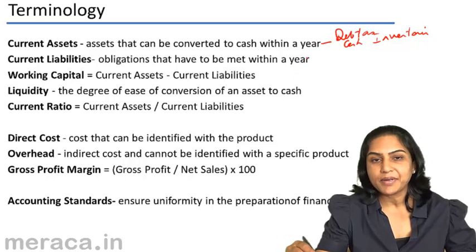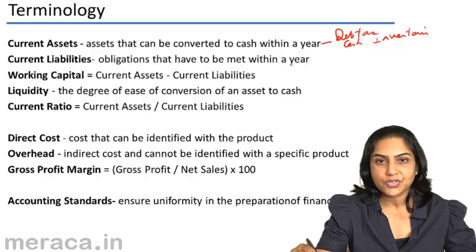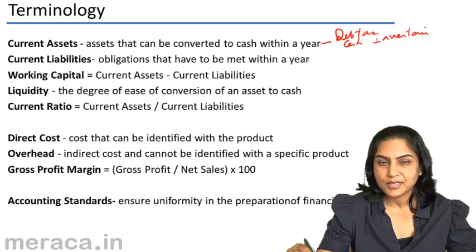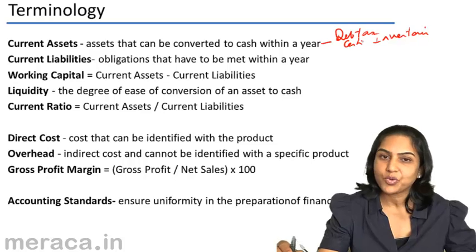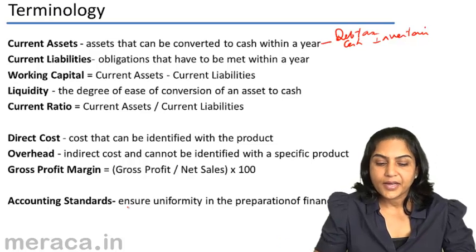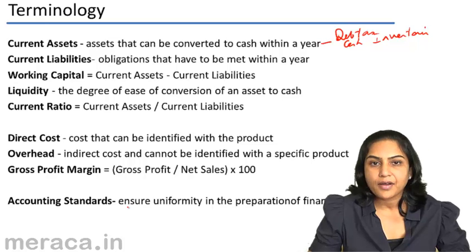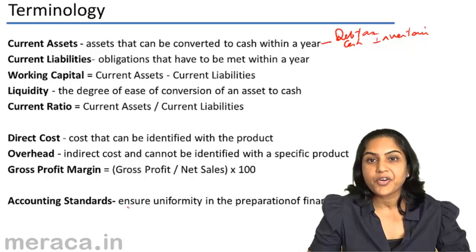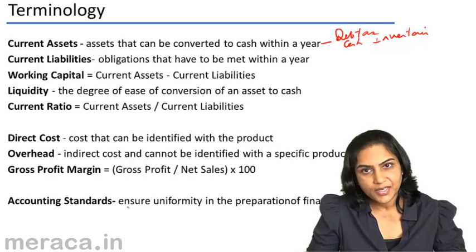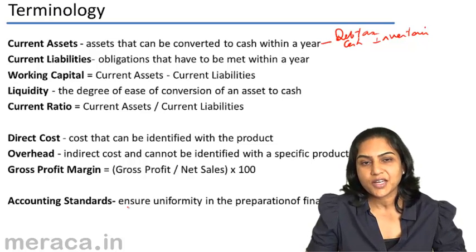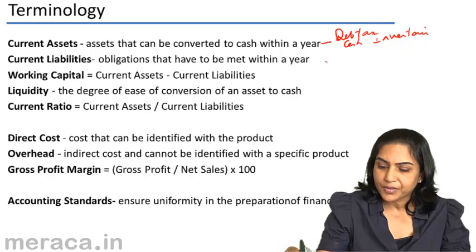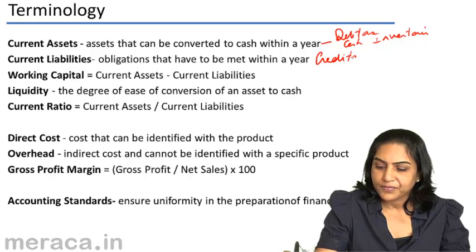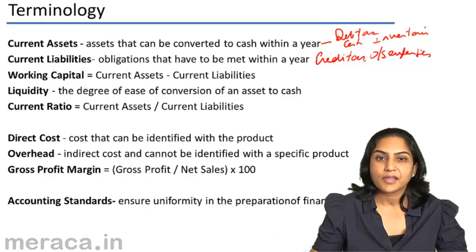Current liabilities are obligations or debts which need to be met within a year or within an operating cycle, whichever is longer. Current liabilities would include creditors, outstanding expenses, etc.